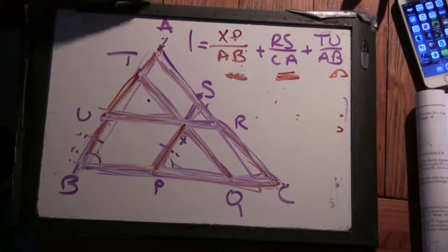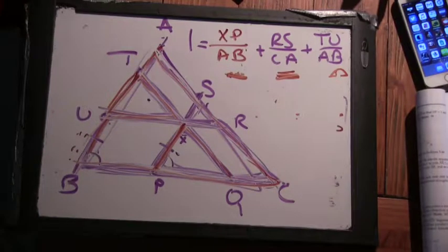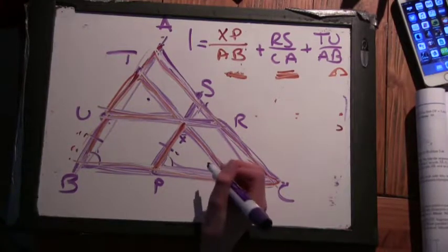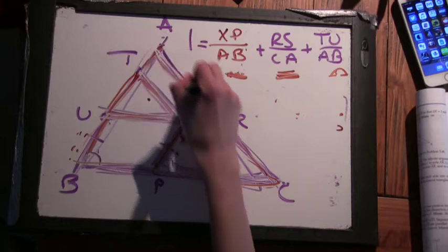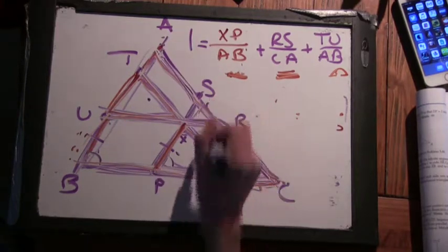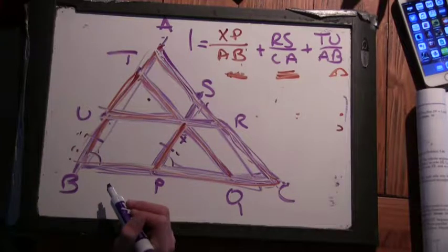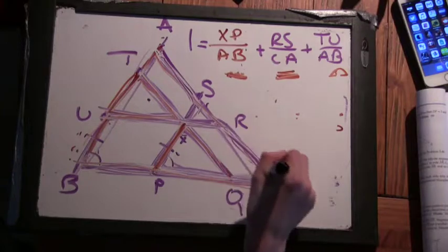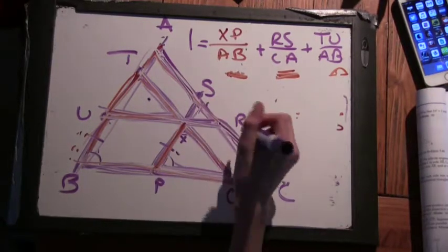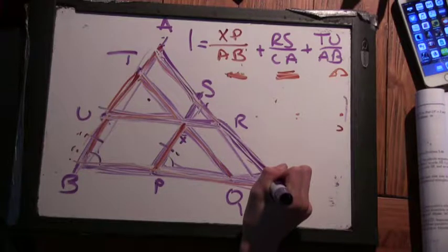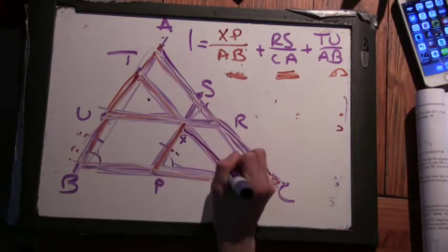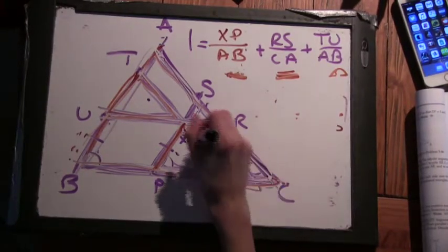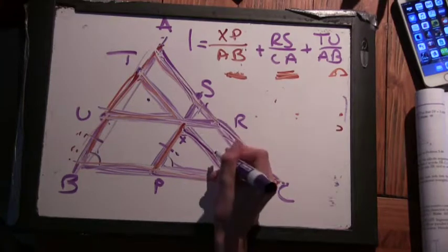Well, we could try something similar to what we did. So, we have, we can look at, so we could try to do the same thing with one of these RC or SA sides. So, we could look at this side RC, and then this would be the same length as Q, the QX would be the same length as RC. That's true.